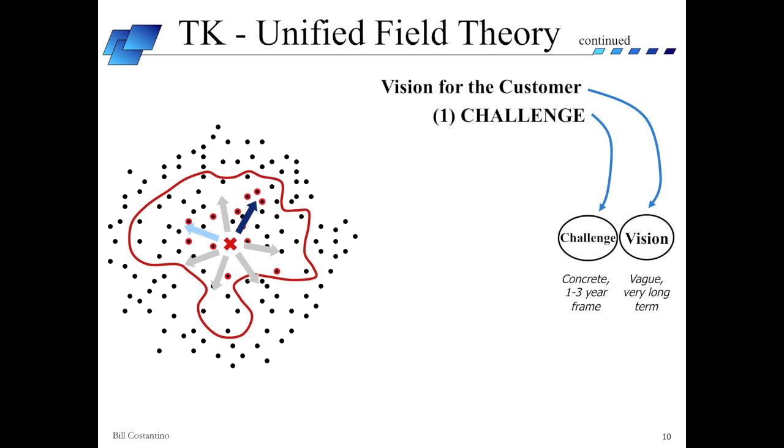In order to provide a more tangible and concrete objective, we look for a specific challenge that's well aligned with the longer-term vision. Typically, this challenge is in the one to three-year time frame. As you can see in this example, while we may feel most confident and comfortable in the direction of our personal bias, it may not be well aligned to move us in the most direct path toward our longer-term challenge and vision.